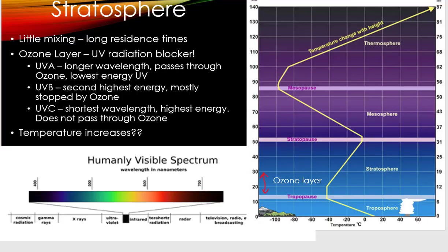Looking at the stratosphere: the key thing is there's little mixing up there. The ozone layer occurs in the stratosphere between 15 and 30 kilometers, and the ozone layer blocks ultraviolet radiation. Ultraviolet represents the shorter wavelengths. Looking at the electromagnetic spectrum, it goes from cosmic rays, gamma rays, x-rays, UV ultraviolet, then visible light — which is the white light that can be separated into the colors of the rainbow — and then infrared, which is a little bit longer wavelength.